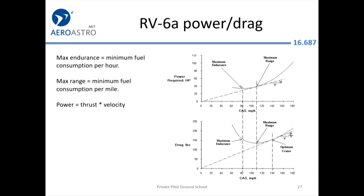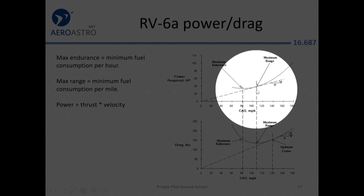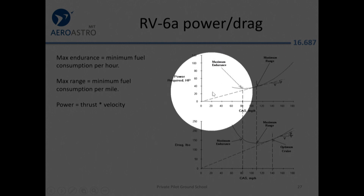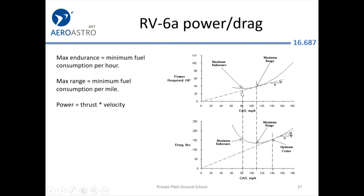Here is a power and drag curve for an RV-6A — the experimental guys are more aggressive about producing charts. If you care about where you're going, you want to be a little up the power-required curve — find where it's tangent to one of these lines going back to zero. If all you care about is maximum endurance, you want to be at the point where the curve is at its bare minimum, because then you're consuming the least power and burning the least fuel.